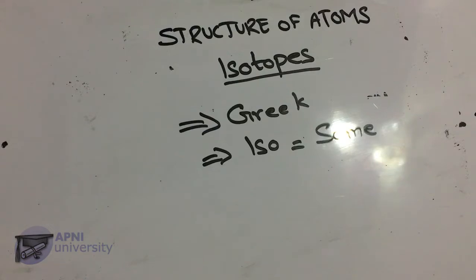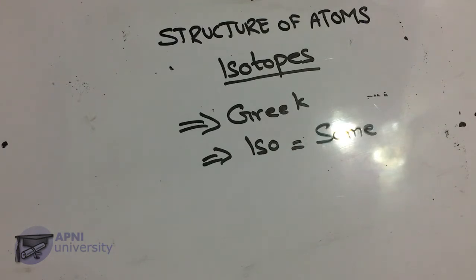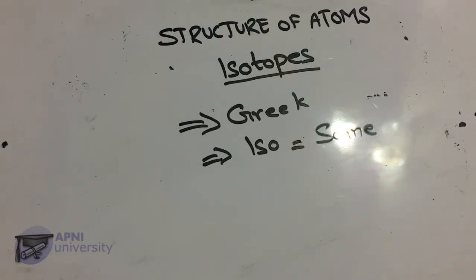In isotopes, the atomic number is the same but the atomic mass is different. Such elements are called isotopes and are said to be isotopes of each other.